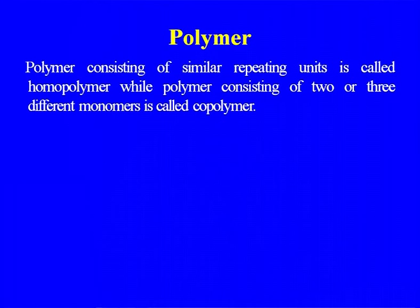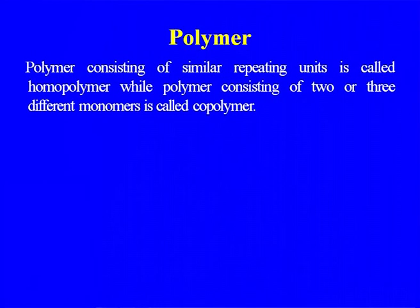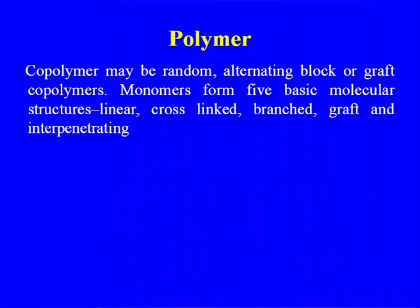A polymer consisting of similar repeating units is called a homopolymer; we also have copolymers where we use comonomers — for example, in polyethylene we also add butene-1, and in modified acrylic fiber we use vinyl chloride also. A polymer consisting of two or three monomers is called a copolymer. Copolymers may be random, alternating, block, or graft copolymers.